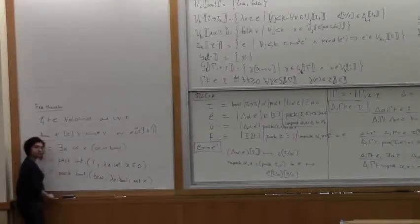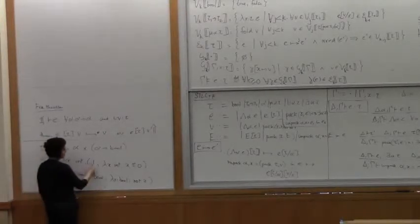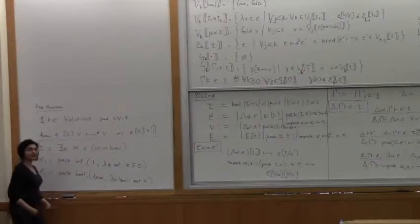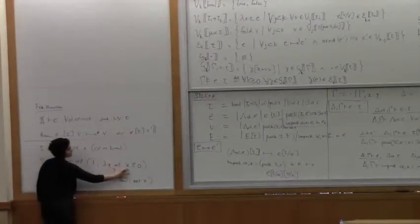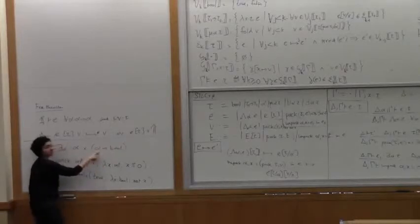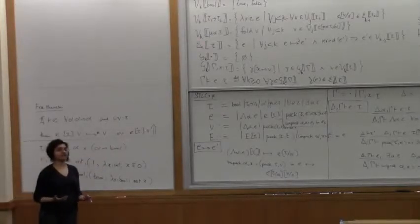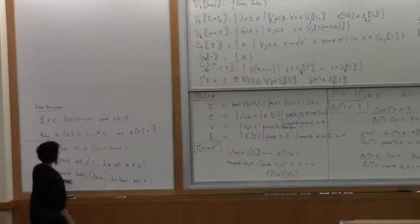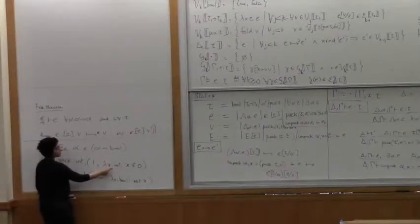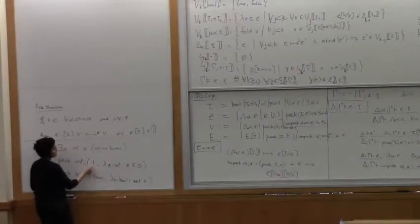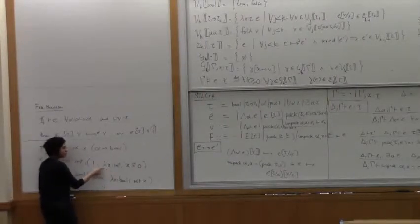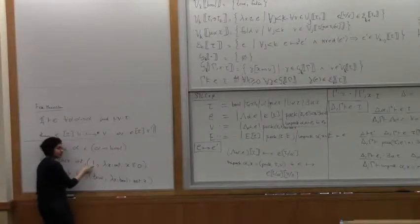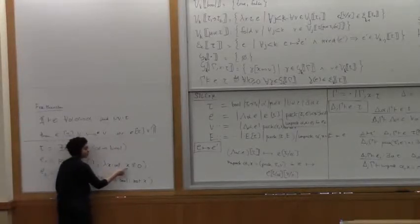This function over here takes inputs of an abstract type alpha. So here, the only alpha that I can give it will be the only alpha that I have, which is this one. So this function can never be called with anything except for the thing sitting over here. So it will always be called with one.